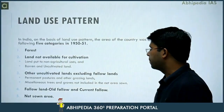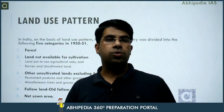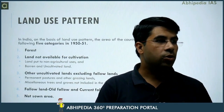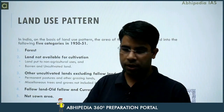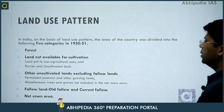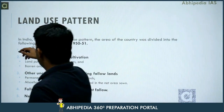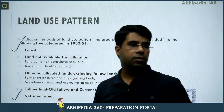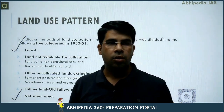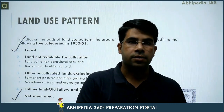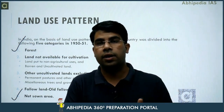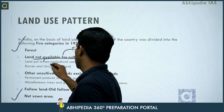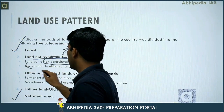Let's talk about land resources — land utilization and land use pattern in India. When we classify land, five categories emerge. The first two major ones are forest cover and net sown area. The third is land not available for cultivation, and the fourth is net sown area for agriculture.